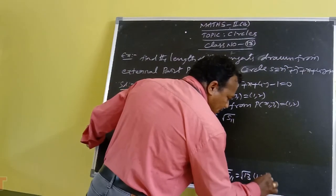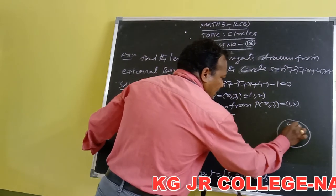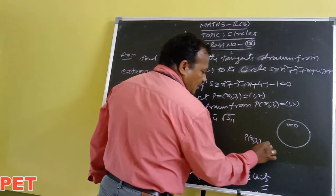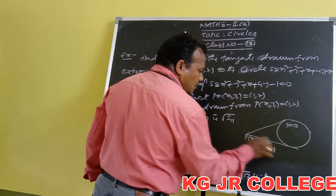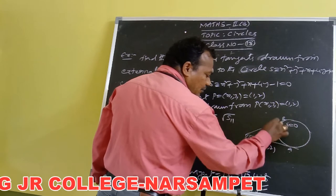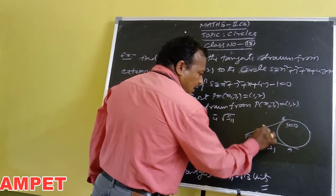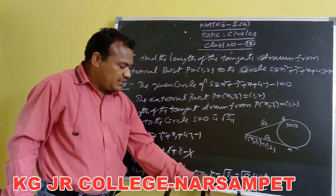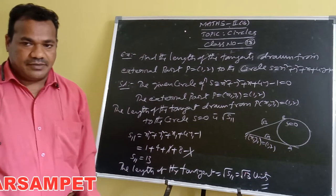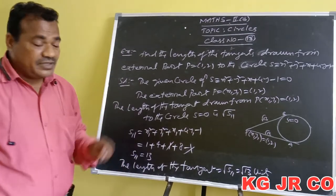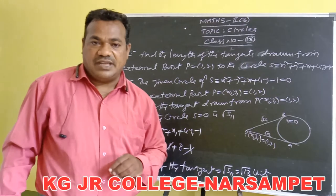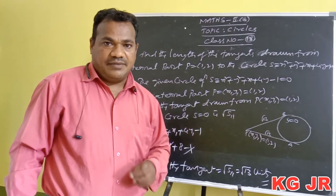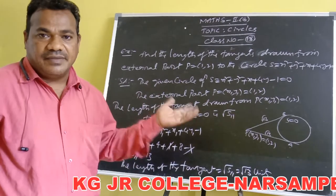From the rough diagram, the given circle and external point P(1, 2) are shown. Two tangents are possible from P to the circle, both equal in length. The length of both tangents drawn from the external point to the circle is √13 units. Students must practice similar exercise problems based on the length of the tangents.